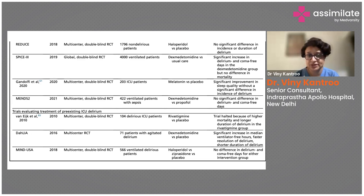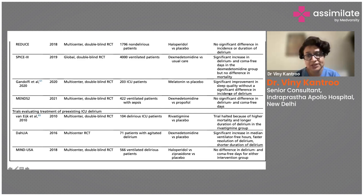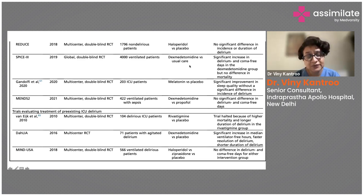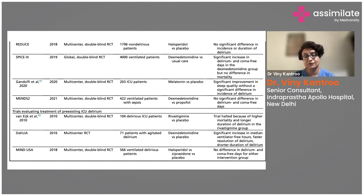Ramelteon (a melatonin congener) versus placebo in a small number of patients showed lower prevalence and shorter duration of delirium, but again the sample size was small requiring more trials. Low-dose nocturnal dexmedetomidine versus placebo showed significant reduction in delirium but only in 100 patients. Conversely, the large SPICE-3 trial (2019, approximately 4,000 patients) — dexmedetomidine versus usual care — showed a paradoxical significant increase in delirium- and coma-free days in the dexmedetomidine group but no difference in mortality. Melatonin versus placebo showed improved sleep quality but no significant difference in delirium incidence, so melatonin cannot be recommended for treatment or prevention of delirium in ICU patients.